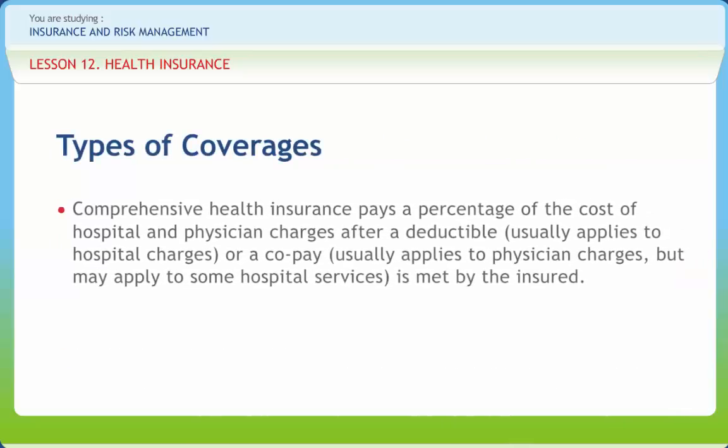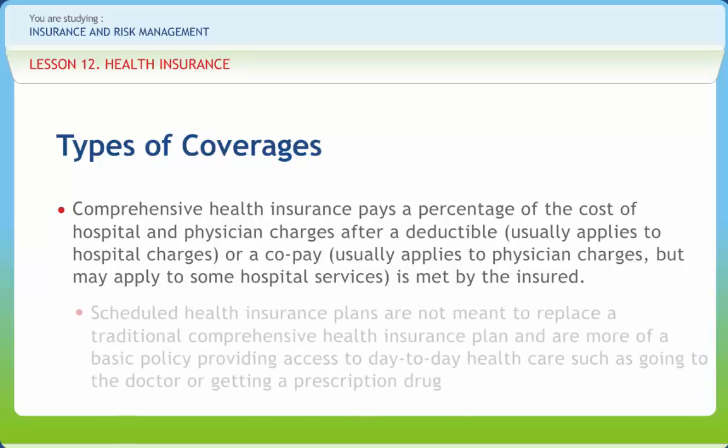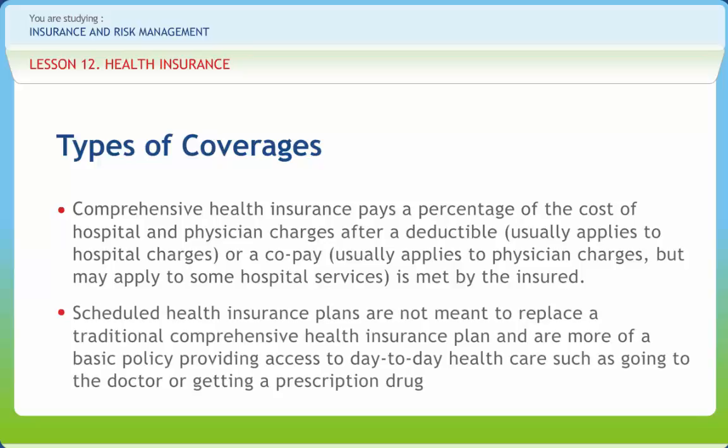Comprehensive health insurance pays a percentage of the cost of hospital and physician charges, after a deductible — which usually applies to hospital charges — or a co-pay — which usually applies to physician charges but may apply to some hospital services — is met by the insured. Scheduled health insurance plans are not meant to replace a traditional comprehensive health insurance plan and are more of a basic policy providing access to day-to-day health care such as going to the doctor or getting a prescription drug.